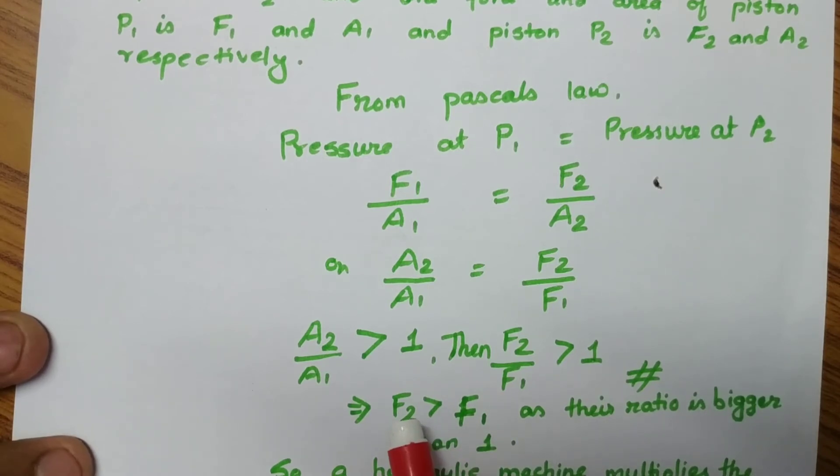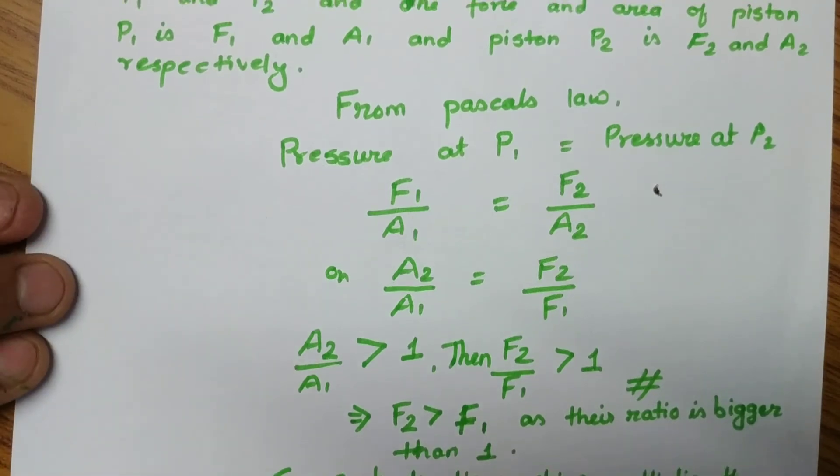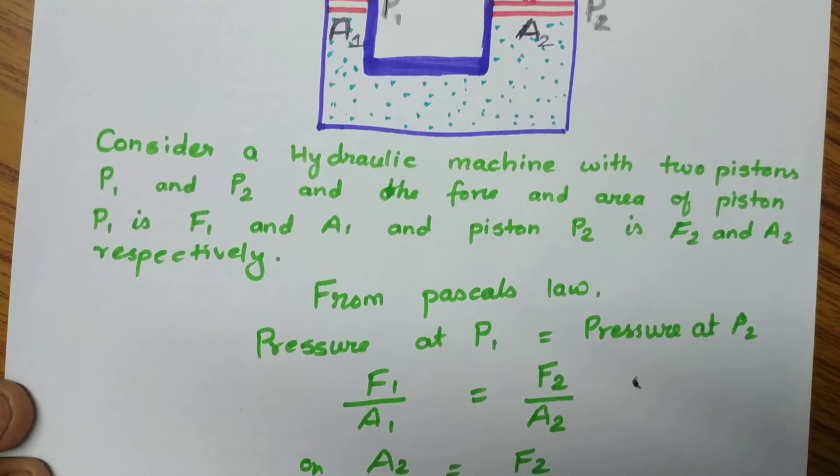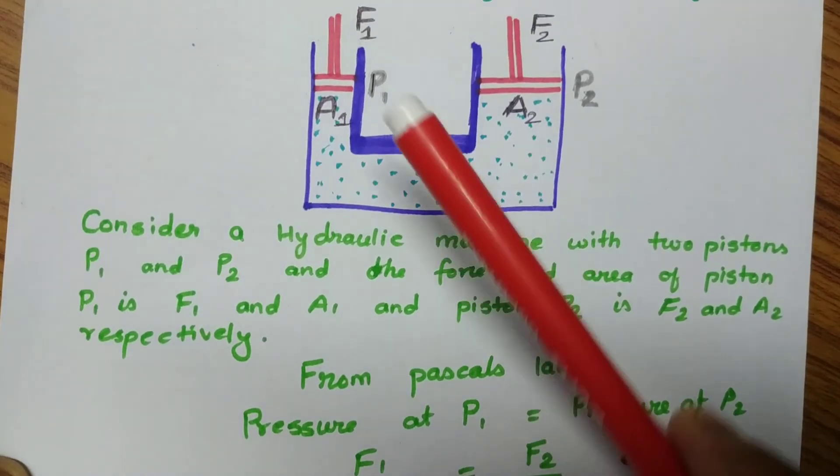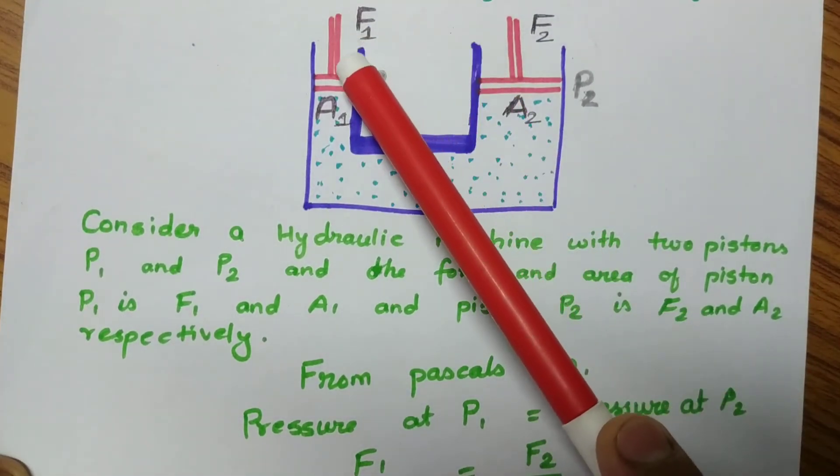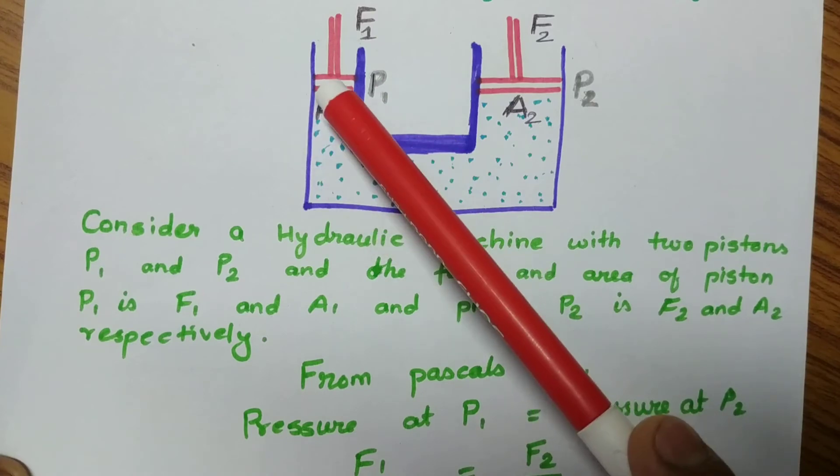So by applying a little force in piston 1 - you see the figure here - if you apply force in the smaller piston, what happens?